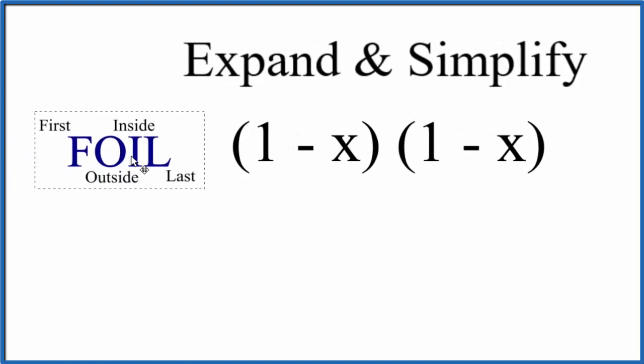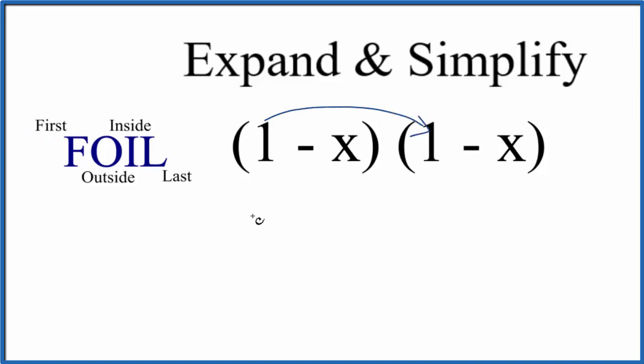We can use the FOIL method to make sure we get that straight. The first term, we'll multiply those, so 1 times the 1 here. That just gives us 1. Then we can do the outside terms. That's the 1 and the negative x. 1 times negative x, that's just negative x.